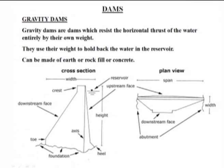Starting with the gravity dam: gravity dams resist the horizontal thrust of the water entirely by their own weight. If this is the water level, the horizontal thrust of the water is resisted completely by the dam's own weight, which means whatever horizontal load is coming, the gravity dam will resist it by its own weight.